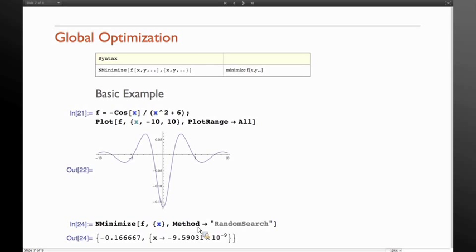There's several methods. There's a simulated annealing method. There's differential evolution, there's random search, and there is Nelder-Mead. I think Nelder-Mead was the default on this problem.